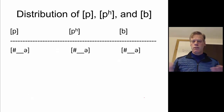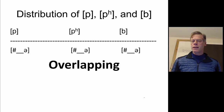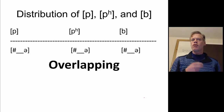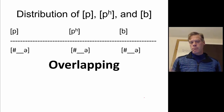That's a matter of listing their distribution. The next question we need to ask is whether this is overlapping or complementary. Well, it's overlapping — they all occur in the same place. It's clearly not complementary distribution, which means you don't find them in the same environments, but we do. So it's overlapping.